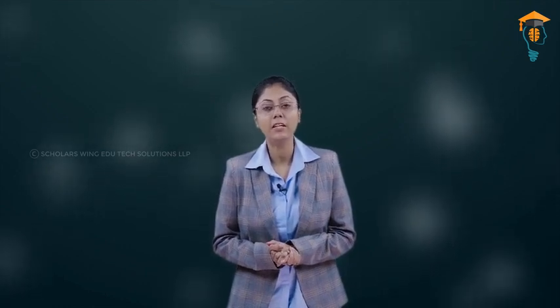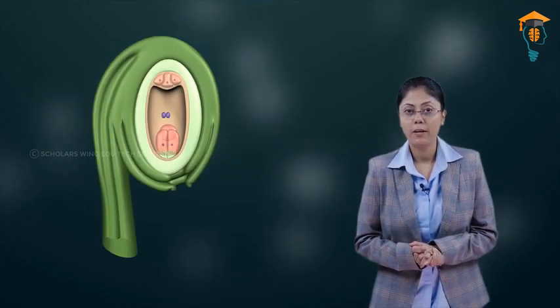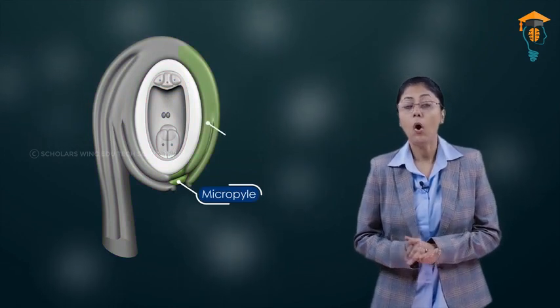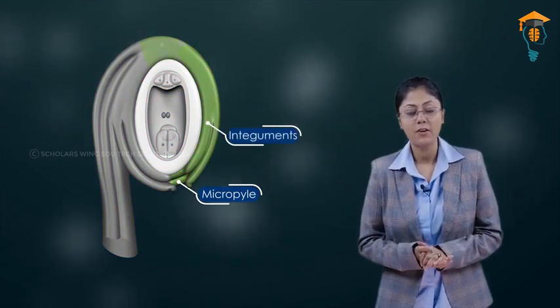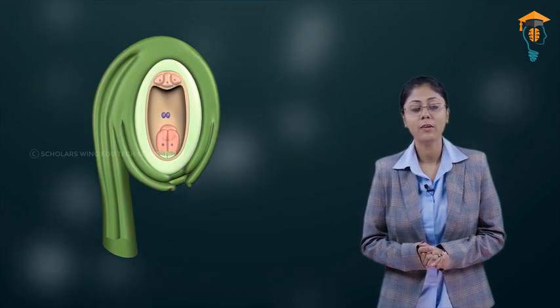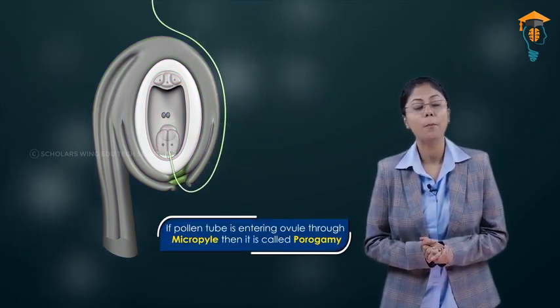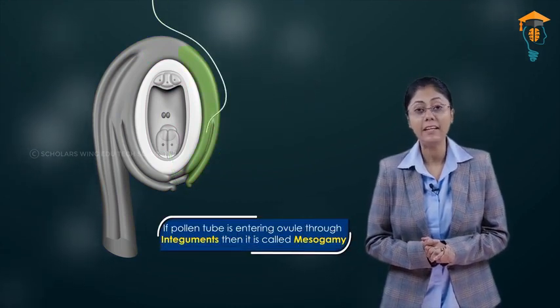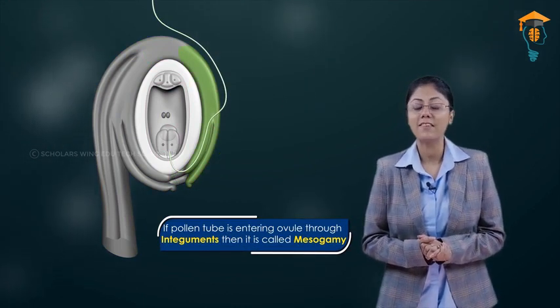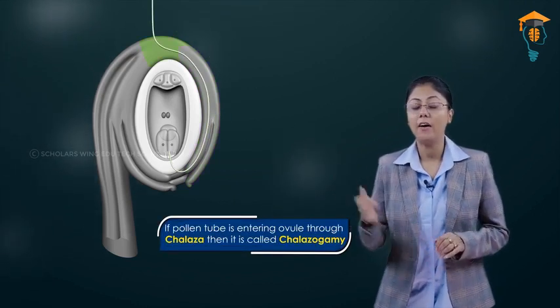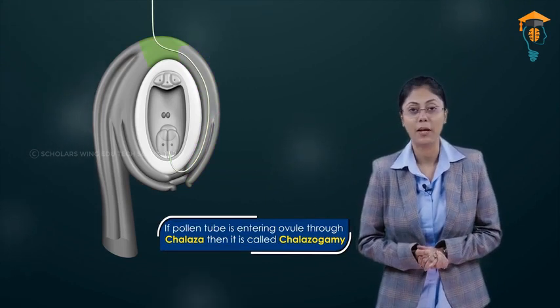Please pay attention — this is very important for your exam papers. The pollen tube can enter the ovule either through the micropyle, through the integuments, or through the chalaza. If it enters through the micropyle, it is known as porogamy. If it enters through the integuments, it is known as mesogamy. And if it enters through the chalaza, it is known as chalazogamy.